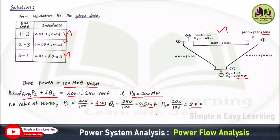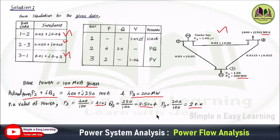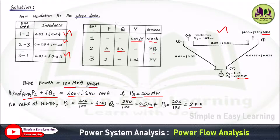Now we draw the bus data tabular column with three buses: bus 1, 2, and 3. From the diagram, the first bus is a slack bus with voltage 1.05 and angle 0 specified. The second bus is a load bus — P and Q are specified as 4 and 2.5 per unit values — it is a PQ bus. The third bus has real power and voltage magnitude specified — it is a PV bus, also called a generator bus.